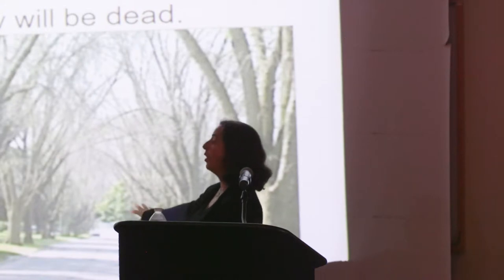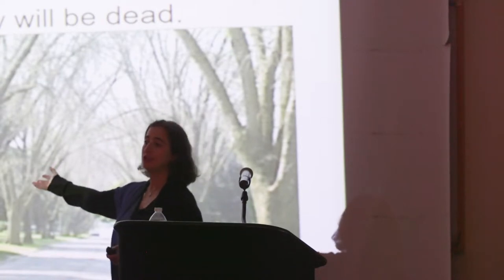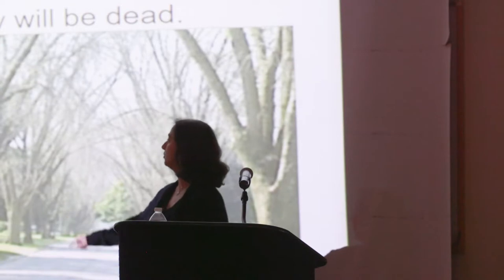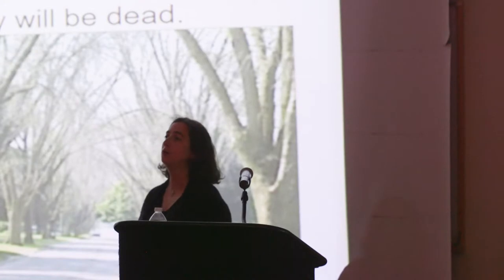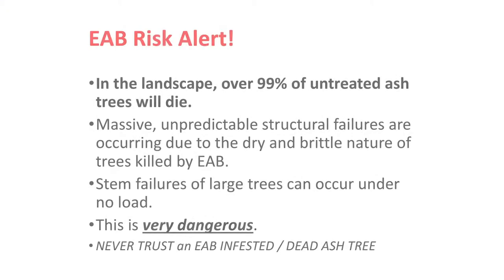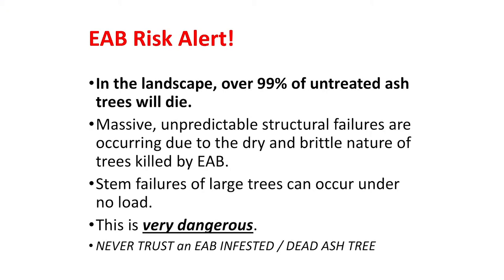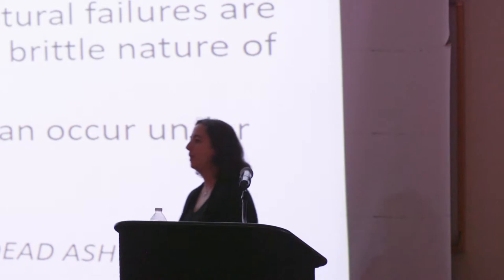This picture is from Ohio where you have this allee of ash trees that is perfectly healthy in the summer of 2006, and then by the summer of 2009 every one of them is stone dead. The research tells us that folks from the Midwest who have been dealing with this since 2002 tell us that in the landscape over 99% of untreated ash trees will die. So waiting to see whether or not your ash tree is going to get emerald ash borer and die is really not the best tactic.